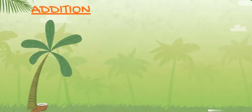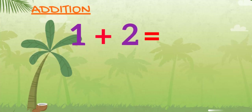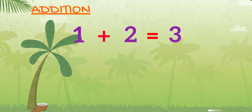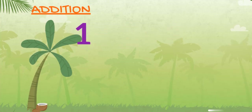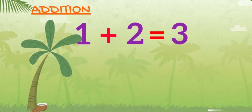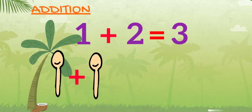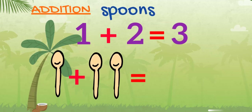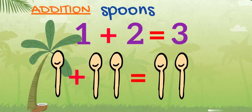1 plus 2 equals 3. 1 spoon plus 2 spoons equals 3 spoons.